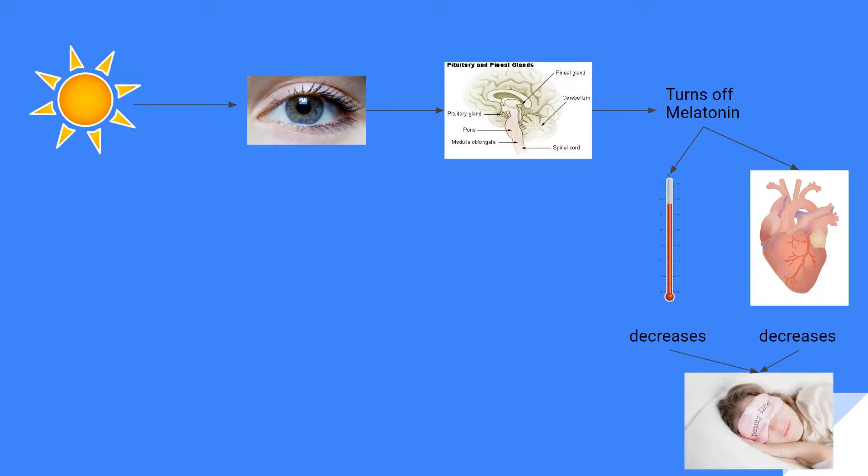So when you think about the day, getting that sunlight is very important because we don't want to feel more tired. This is one of the big reasons that we feel seasonal depression. It's because we're not getting that natural sun.